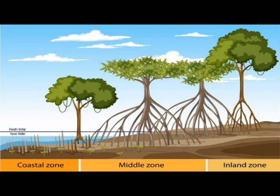Here we have the different zones of mangrove forest. You have the coastal zone — these are the mangroves closest to the sea, deep in the water. In the middle zone, you have another set of mangroves further away from the water, but still affected by the high tide. That is the reason why they have stilted roots, so they can stay above the water and stay stable. Further back, the inland zone has mangroves that are not as affected by the tides, but are still somewhat in contact with the water.